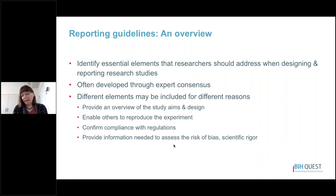Different elements in a guideline may be included for different reasons. Some elements provide an overview of the study aims and study design. Others are reported to enable others to reproduce the experiment. There may be elements like ethics statements that confirm requirements with existing regulations. And lastly, some elements are listed because they provide information needed to assess scientific rigor or the risk of bias.